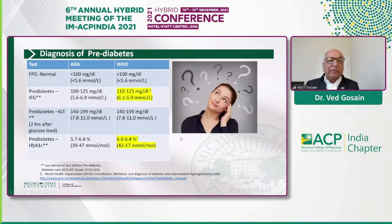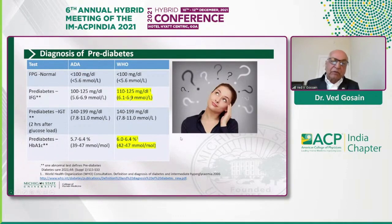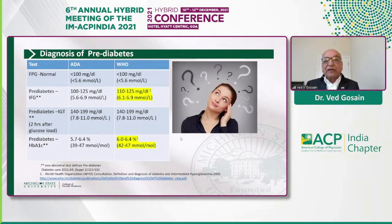Similarly for prediabetes, the hemoglobin A1C criteria for the American Diabetes Association is 5.7 to 6.4, whereas for WHO and IDF it's 6.0 to 6.4. I'll admit my ignorance here because I'm not sure what criteria you folks are using in India.